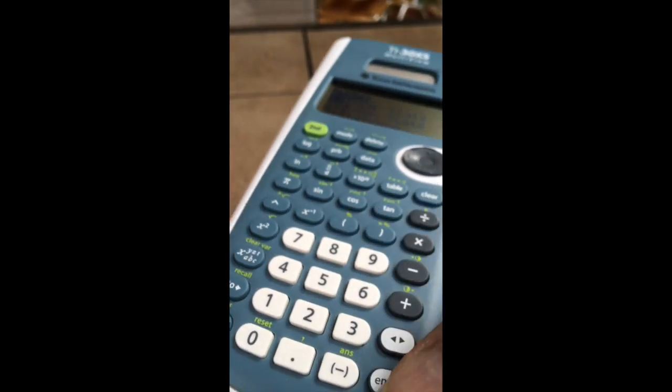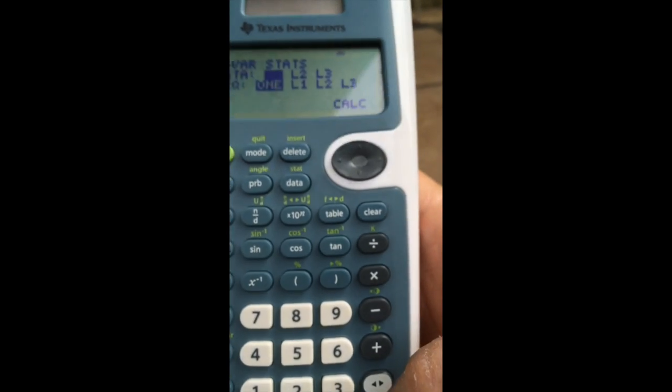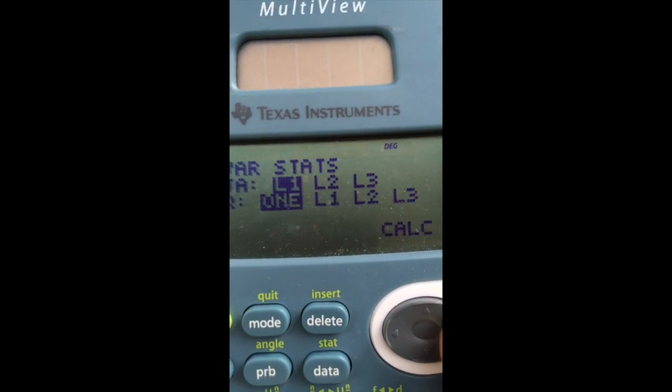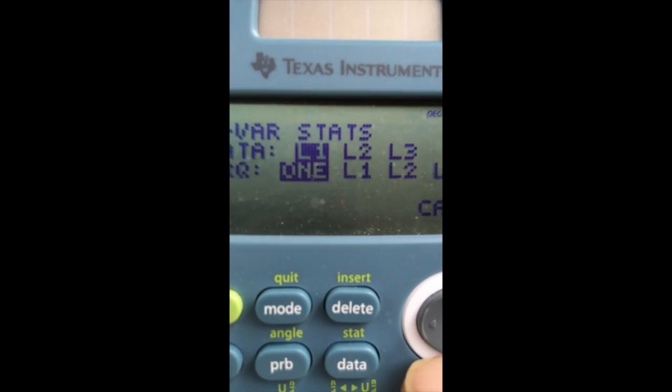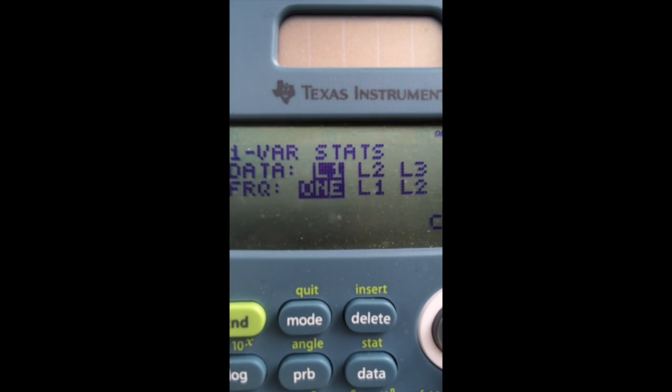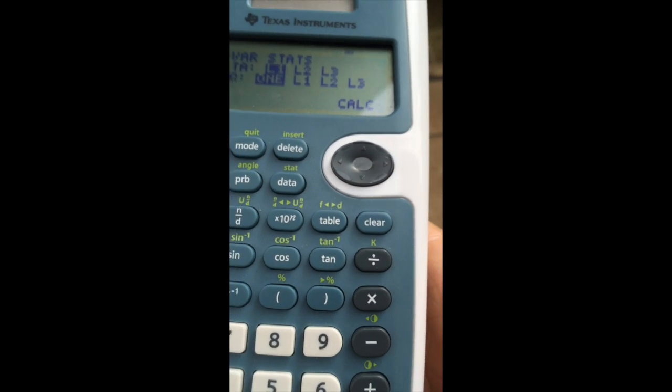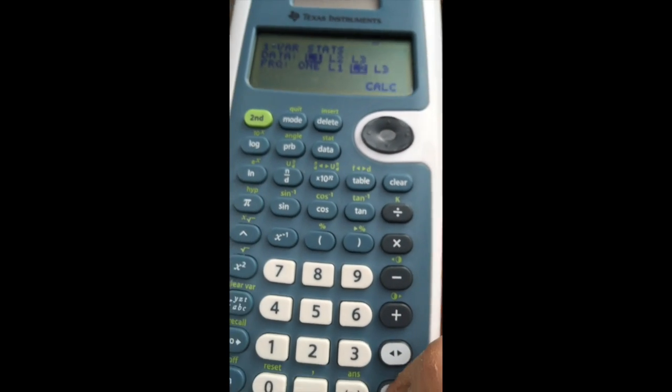I'm still doing one variable stat, I hit enter. But this time, I'm using frequencies, and my frequency is in column two. So down arrow to the frequency line, come over to two, hit enter, and I hit enter again.